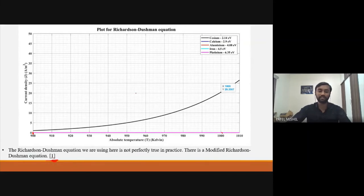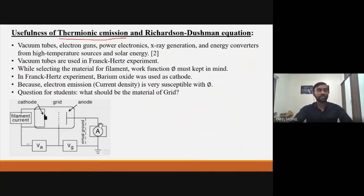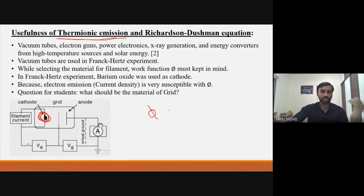Now the last point: the usefulness of thermionic emission and the Richardson-Dushman equation. Thermionic emission is often seen in vacuum tubes, electron guns, and other electronic devices. In the Frank-Hertz experiment studied in previous classes, vacuum tubes are used where thermionic emission is taking place. While selecting the material for the cathode, what should we keep in mind — should its work function be high or less? If I want more current density, or more electrons coming out of the cathode, what should φ be?